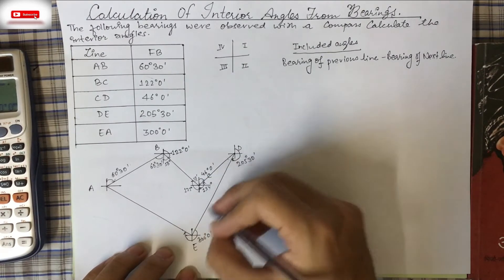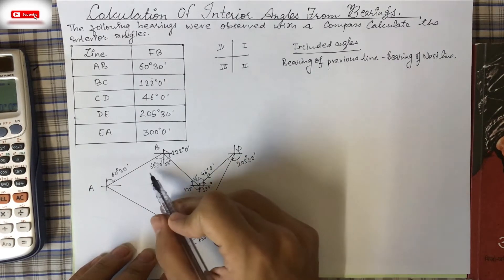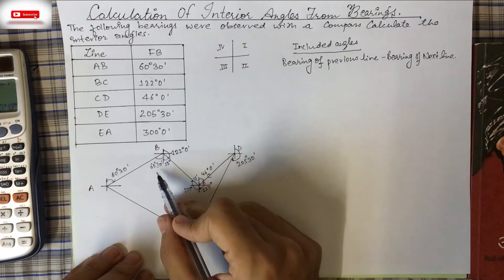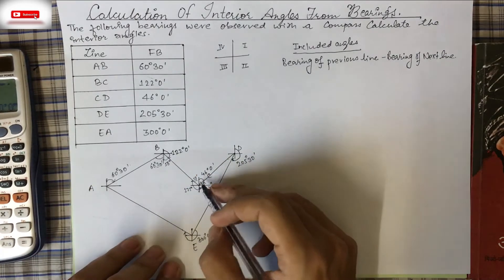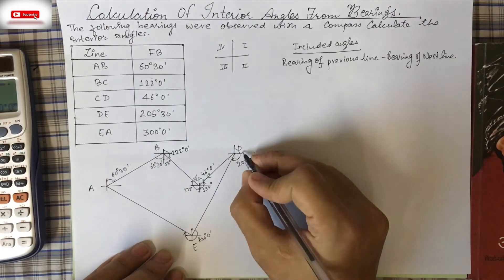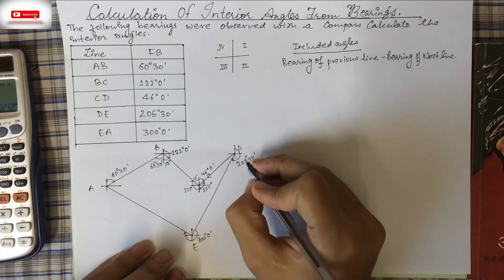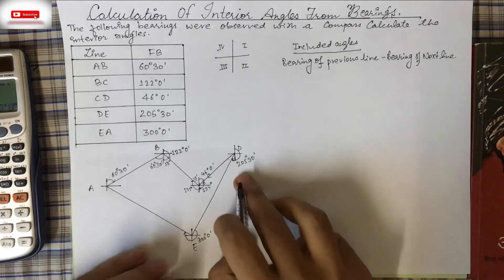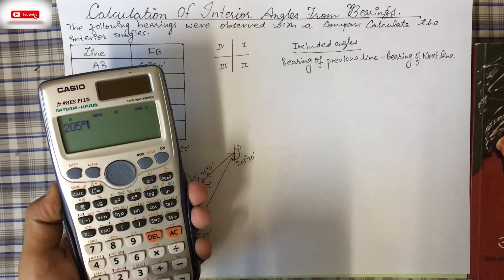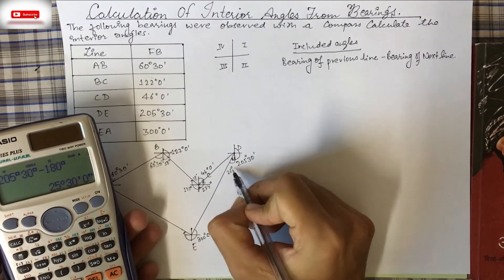For angle D: the bearing of DE is 205°30', and since 205° > 180°, we subtract 180°: 205°30' − 180° = 25°30'. This 25°30' is a component of the interior angle at D. The full interior angle at D is found by combining this with the adjacent component from the figure.